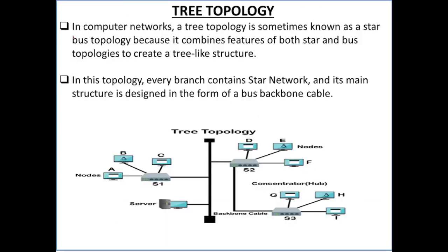Next we have tree topology. In computer networks, a tree topology is sometimes known as star burst topology — it combines features of both star and bus topologies to create a tree-like structure. In this topology, every branch contains a star network, and its main structure is designed in the form of a bus backbone cable. Each branch is a star topology, and the backbone is a bus topology.